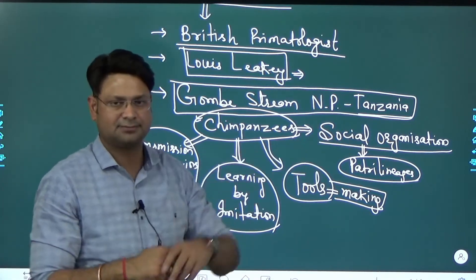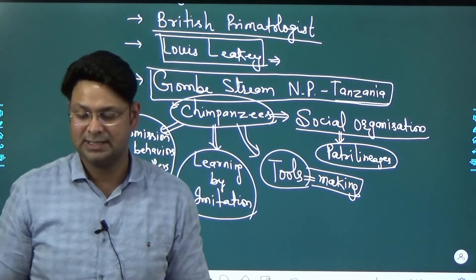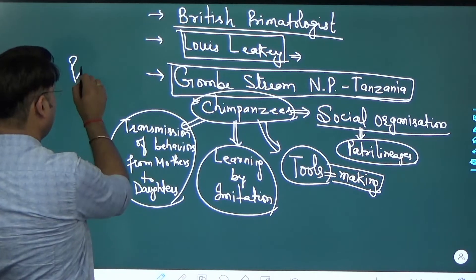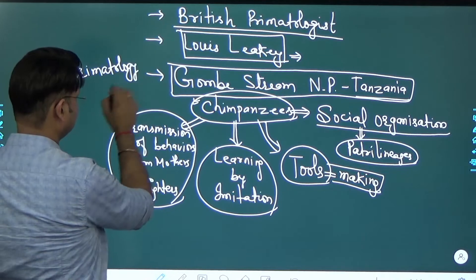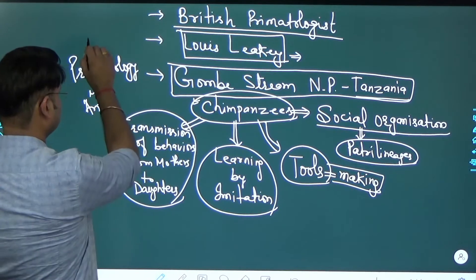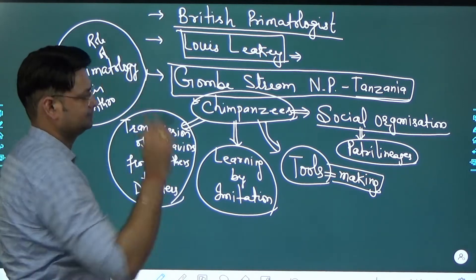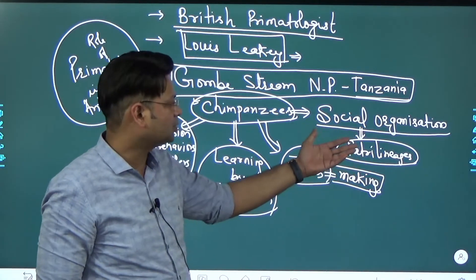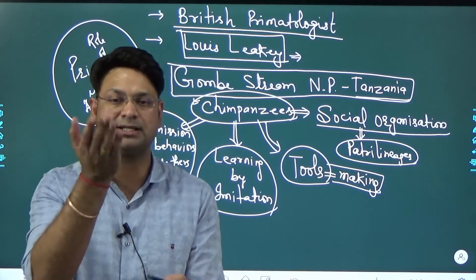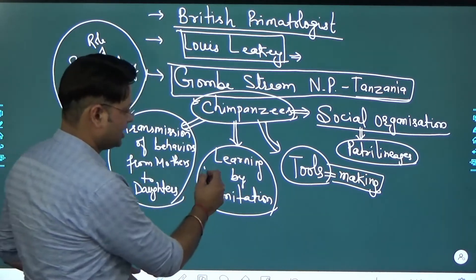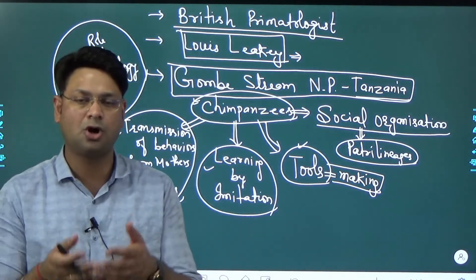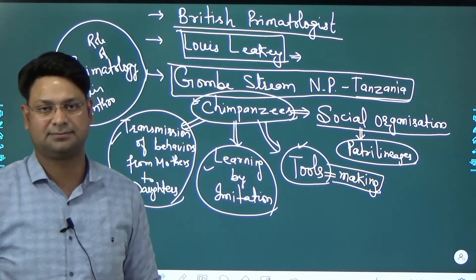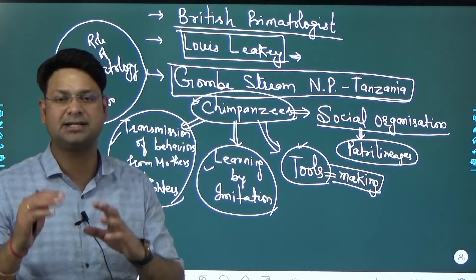Now what is the importance of these findings and where can you use this case study? One application is in the question: what is the role of Primatology in Anthropology? The role of Primatology is to understand cultural behavior and the evolution of cultural behavior - transmission, shared behavior, tool making - all of this helps us understand how present-day human behavior evolved. The learnings of Jane Goodall can provide some insight into that.